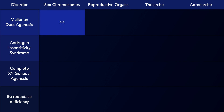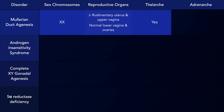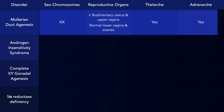With Müllerian agenesis, also known as vaginal agenesis, the person's karyotype is 46XX. They develop a normal lower vagina and ovaries, but may only have a rudimentary uterus and upper vagina. Hormonal levels are unaffected, and as such breast development (thelarche) occurs during puberty.